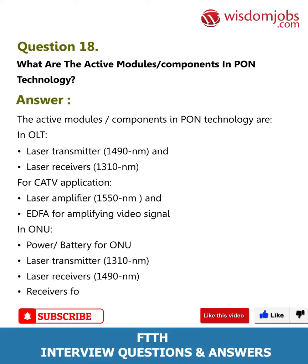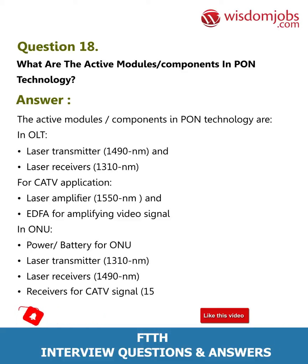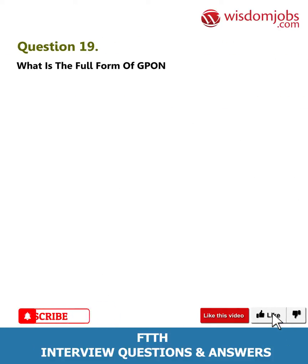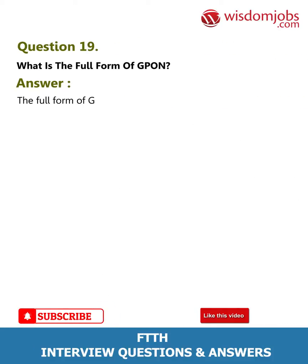Continuing active ONU components: laser transmitter 1310 nm, laser receivers 1490 nm, and receivers for CATV signal 1550 nm. Question 19: What is the full form of GPON? Answer: The full form of GPON is Gigabit Passive Optical Network.